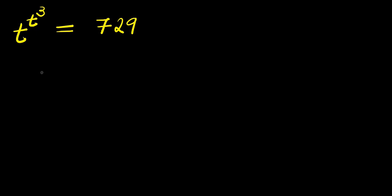Hello. How to solve this exponential problem: t to the power of t to the power three equals 729. We are solving for the value of t that satisfies this equation, so we have the power three here.